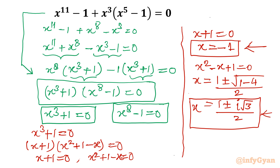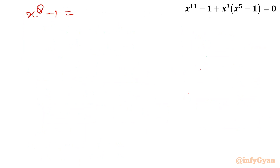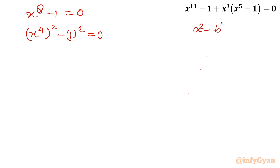Now we will find solutions from x^8 minus 1 equal to 0. I will write it as (x^4)^2 minus 1^2 equal to 0. Now applying the difference of two squares formula: A^2 minus B^2 equals (A plus B)(A minus B).